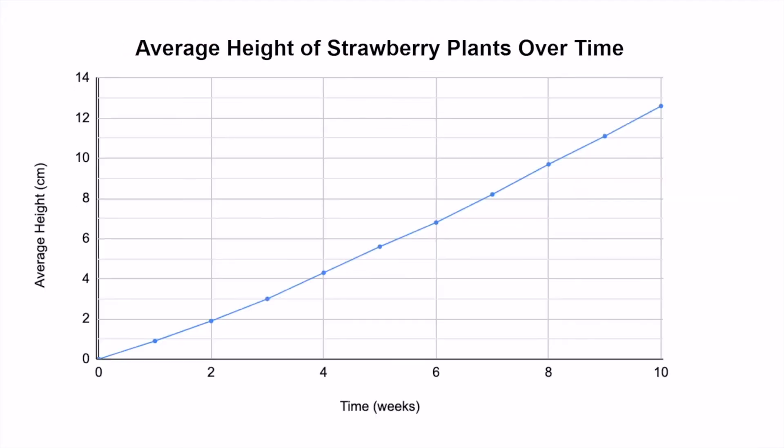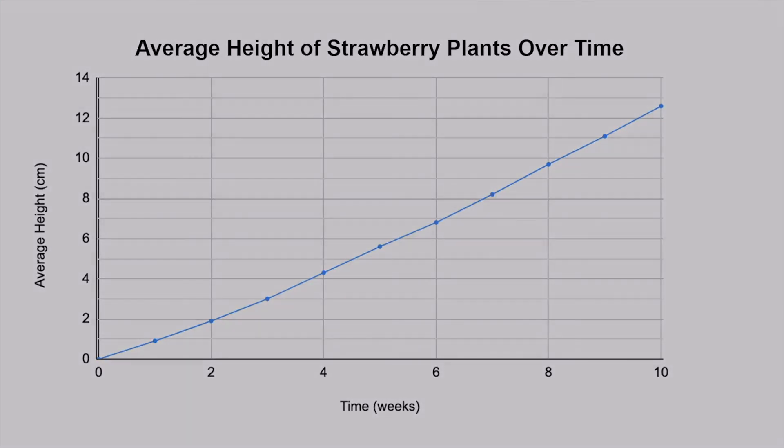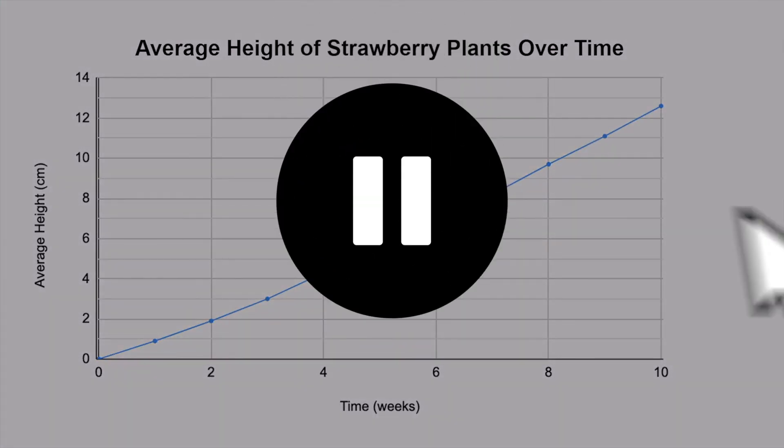Now we simply have to plot the points from our table into our graph. This gives us a great visual representation of the relationship between plant height and time. Go ahead and pause the video to plot these points on the graph in your notes. Once we have our graph, it's time to analyze the data.